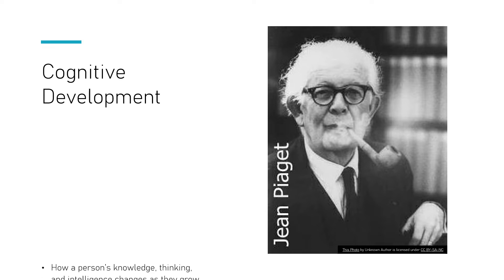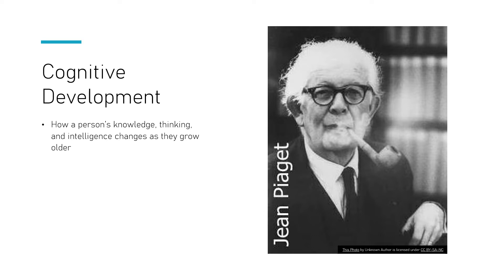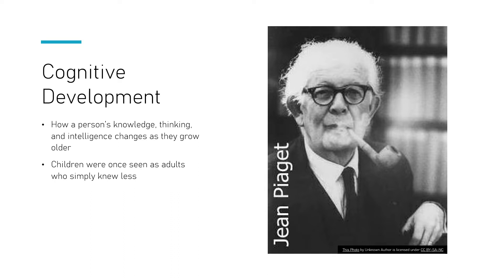When we talk about cognitive development, what we mean is how a person — and obviously in this case a child — how a person's knowledge, thinking, and intelligence changes as they grow. How do they develop cognitively? Remember, cognitive is about thinking. How are we changing and developing as we grow?